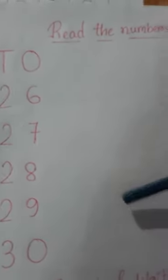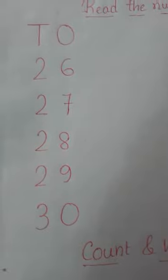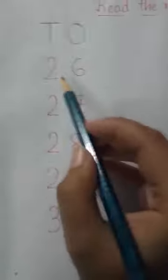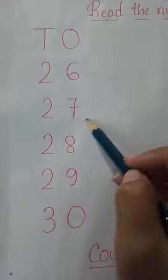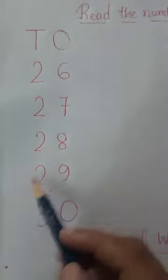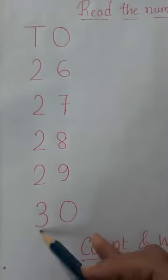Read the numbers. Today we will learn from 26 to 30. Let's read together: 26, 26, 27, 27, 28, 28, 29, 29, 30, 30.